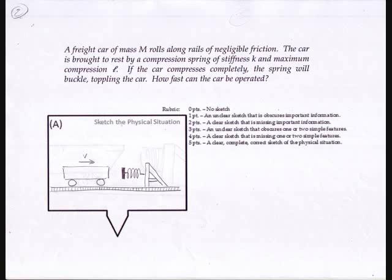The problem I'm going to look at involves a freight car of mass M that rolls along rails of negligible friction. The car is brought to rest by a compression spring of stiffness K and maximum compression L. If the car compresses the spring completely, it will buckle and topple the car. How fast can the car be operated? A compression spring is one that obeys Hooke's Law when compressed but not when extended.